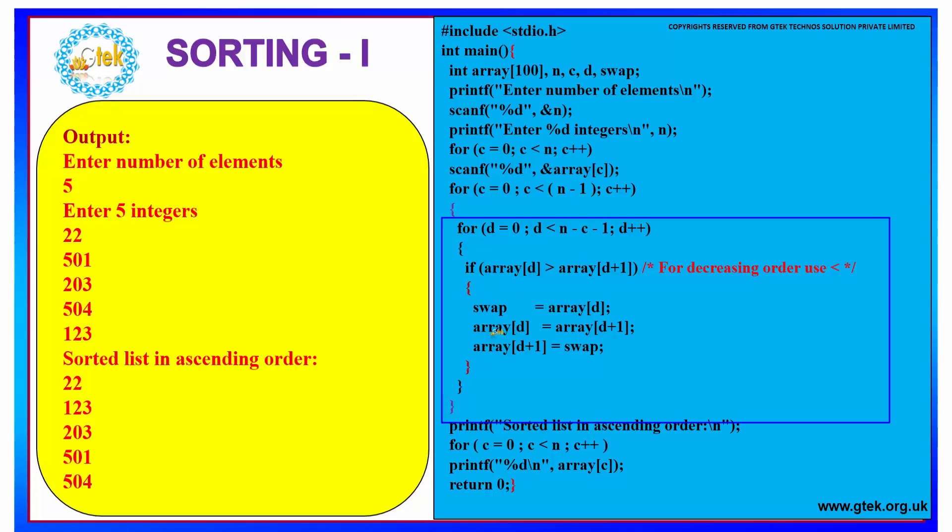For decreasing order here we have arranged our numbers in ascending order. For decreasing order we have to use the value condition to be less than. That is here instead of this greater than, you have to use the symbol less than to get your list in descending order.